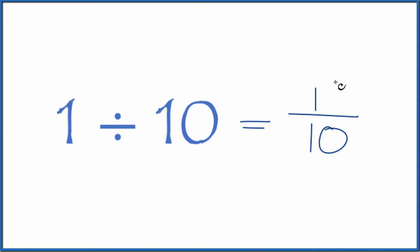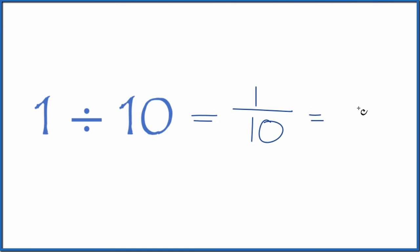We could also take a calculator and divide 1 by 10. So 1 divided by 10, that equals 0.1. That's our decimal.